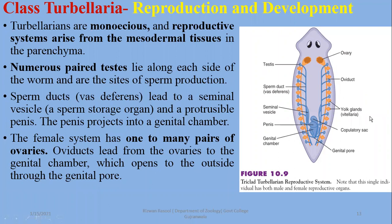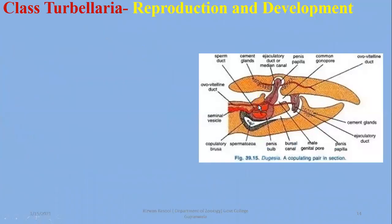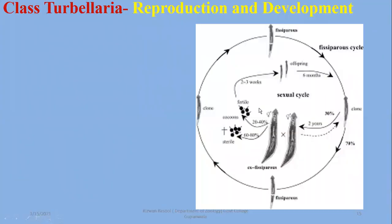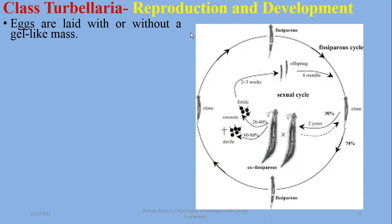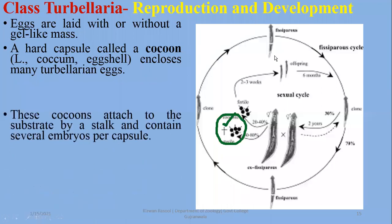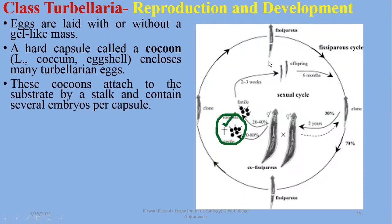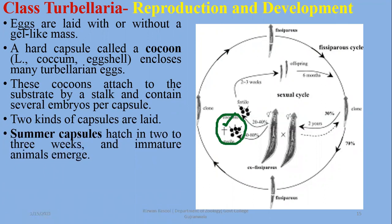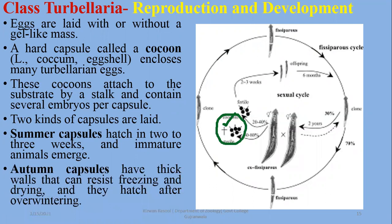You can see the vitellaria diagram here. Yolk glands — the smaller glands shown in yellow — are the vitellaria. After fertilization, eggs are laid in a gel-like mass. A hard capsule called a cocoon encloses many turbellarian eggs, and the cocoon is attached to a substrate by a stalk, containing several embryos per capsule. There are two types of capsules: summer capsules, which hatch and immature animals emerge, and autumn capsules, which have thick walls that resist freezing and drying and hatch after overwintering.